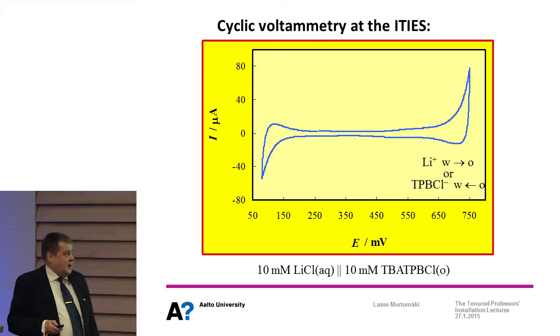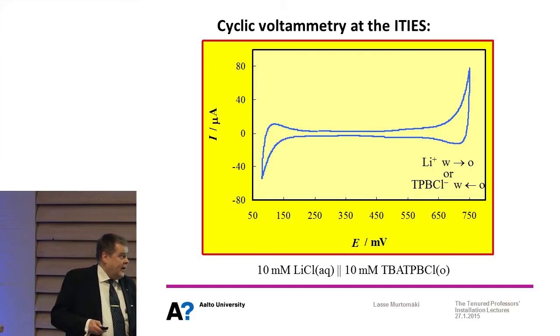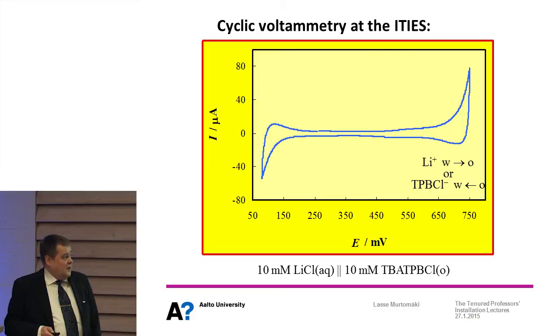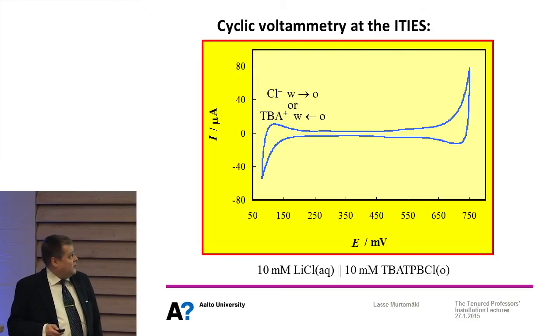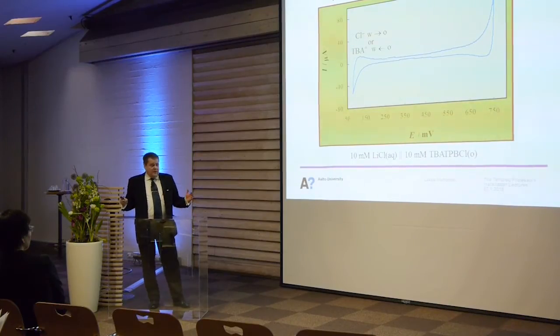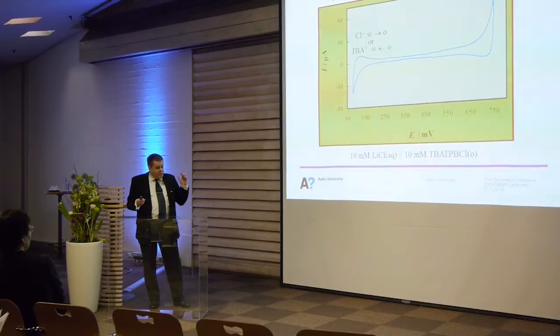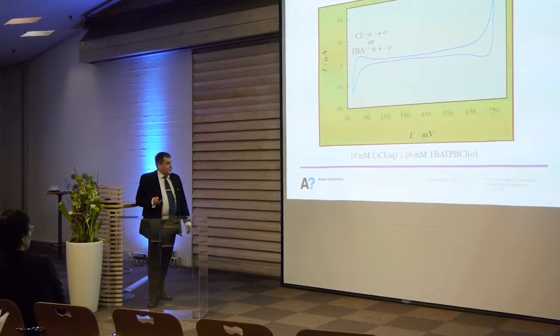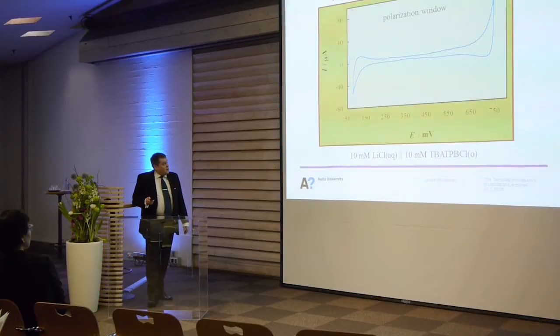On the positive limit either lithium ion is transferring to oil or the organic anion is coming from oil to water. On the negative limit chloride ion is transferring to water or TBA+ is coming into water. It depends which of these ions have lower energy of transfer. We know that in the positive limit is lithium and in the negative limit is TBA+. If we push enough with electrical force then we are able to transfer the ion. We call that polarization window.